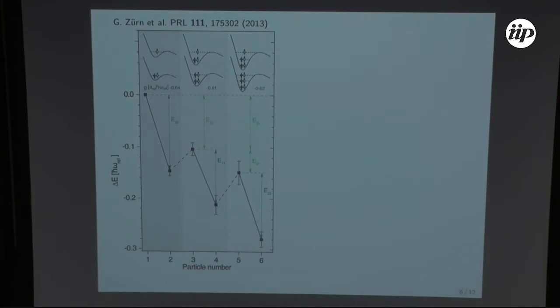So this is again the group from Heidelberg. They can with Feshbach resonance they can induce attraction in the system. And here you can observe the effect that it was known for very long time in nuclear physics, namely the even-odd effect.